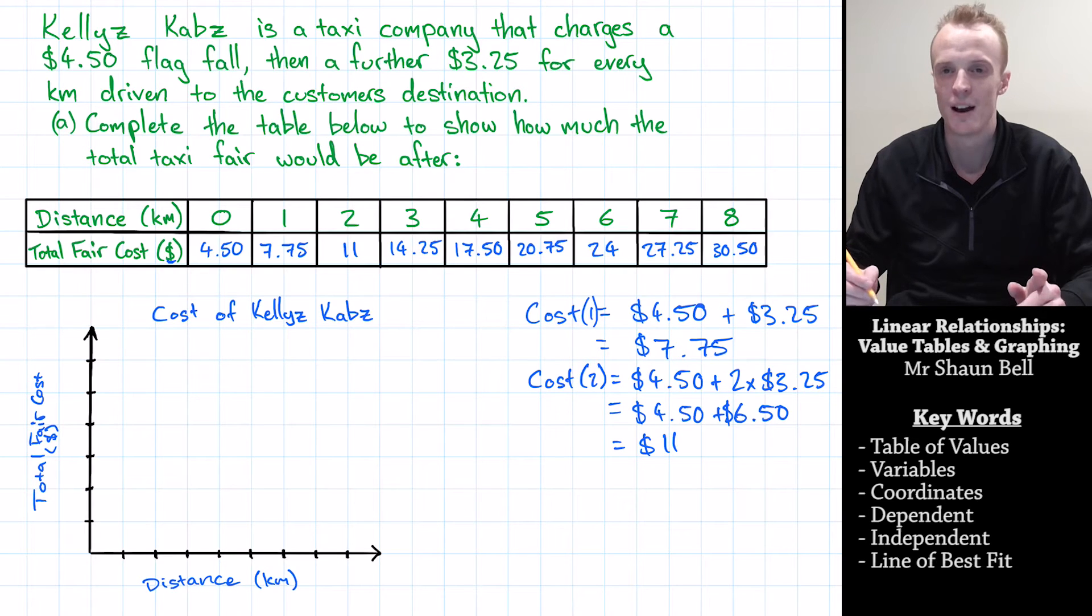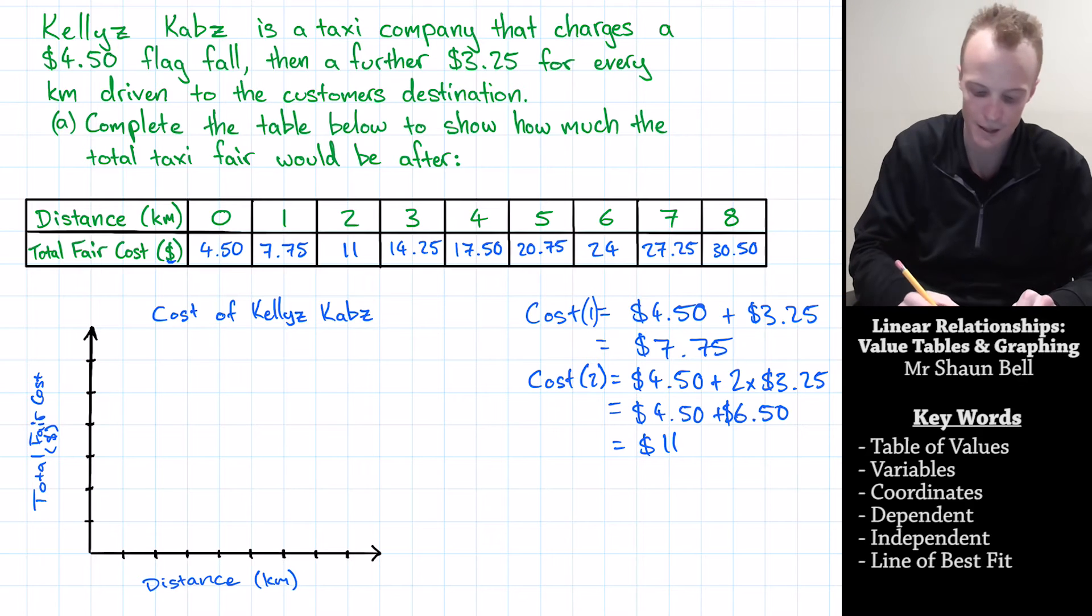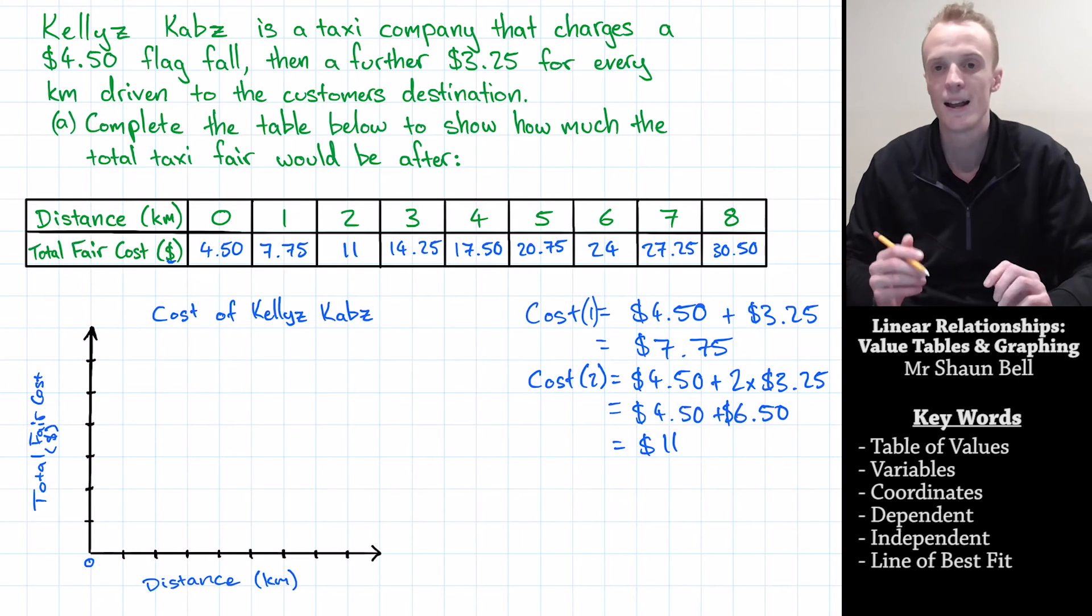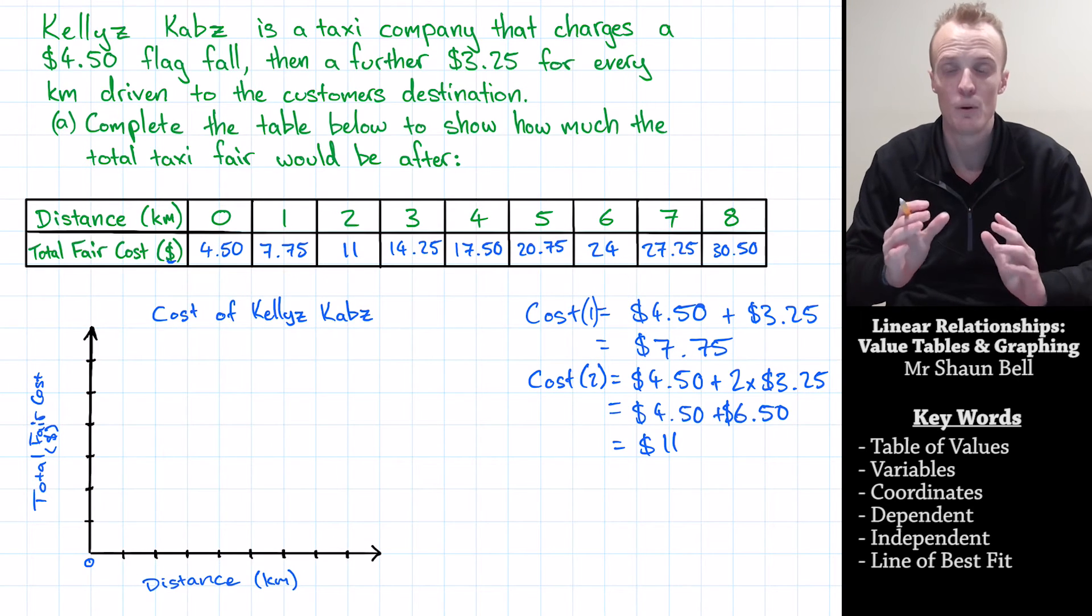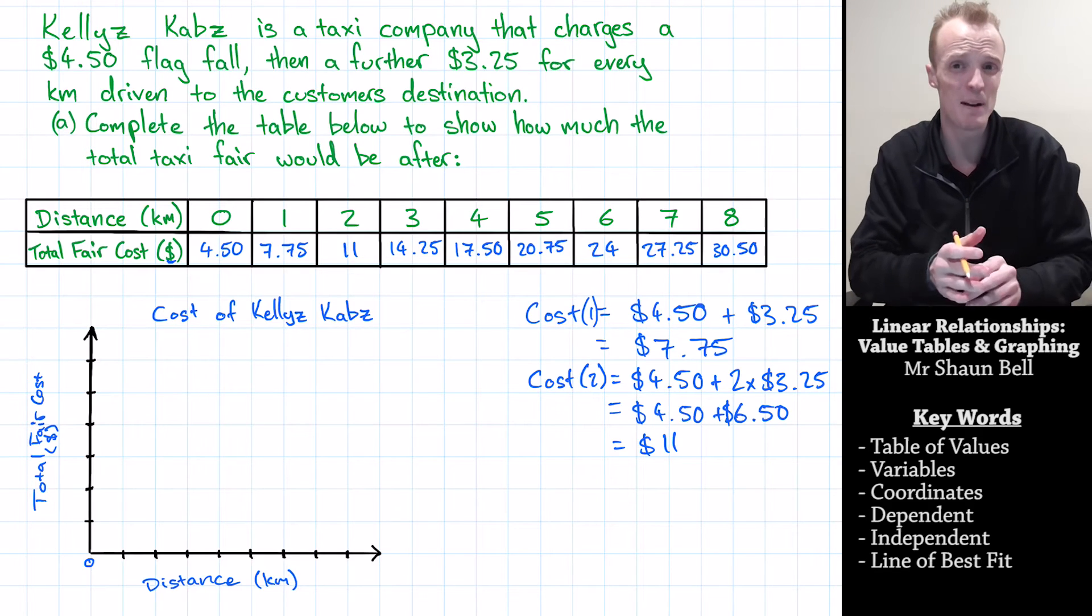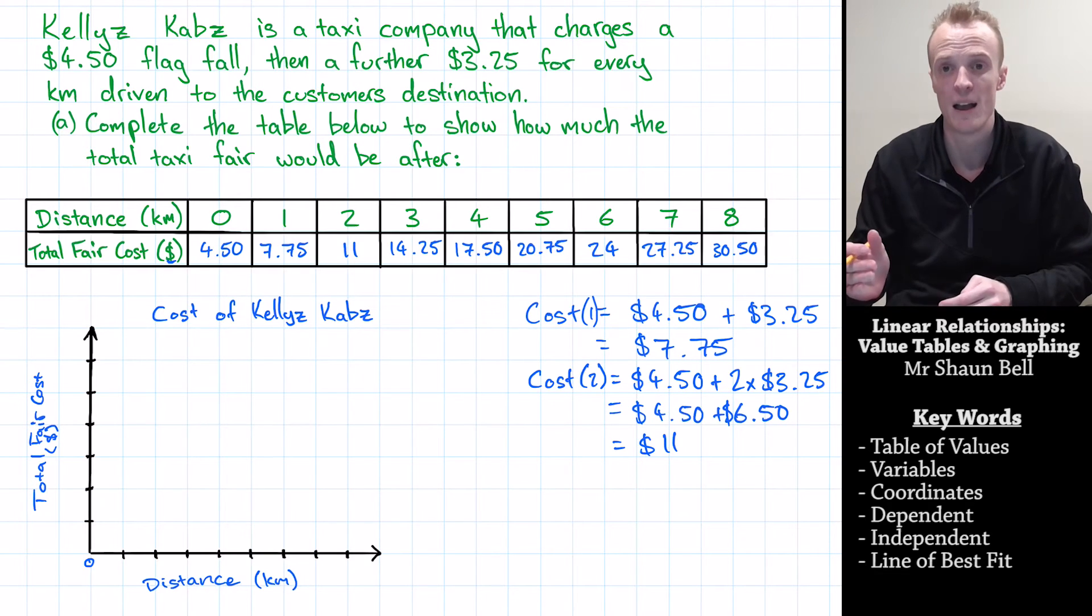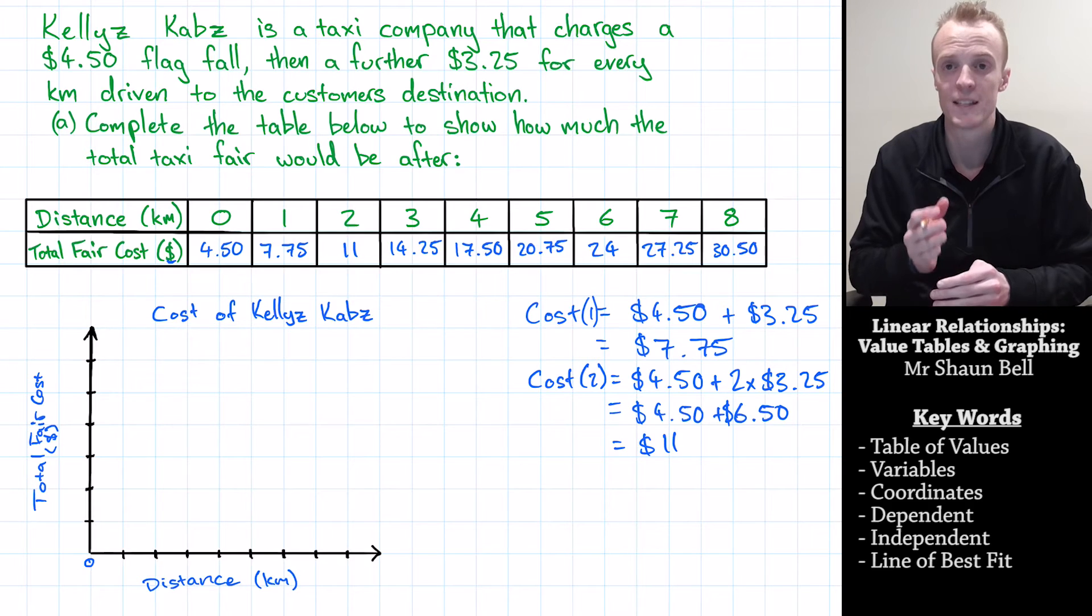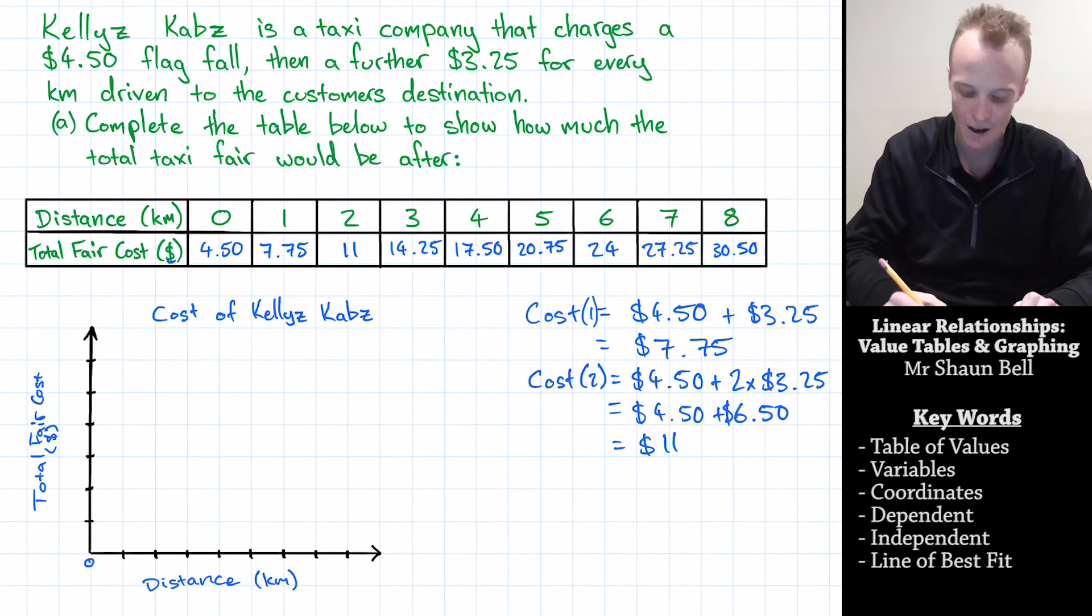The next thing we need to decide is an appropriate scale starting from zero for our x-axis. Now what's really important with scales is it doesn't matter how much you necessarily go up by, as long as you go up by the same amount each time. Now here, I think it's appropriate to go up by one kilometre for each square.